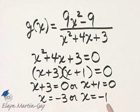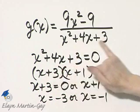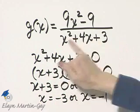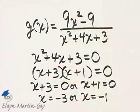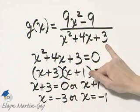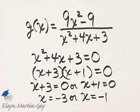So notice what we know so far. If x is negative 1, the denominator is zero and this rational expression is undefined. If x is negative 3, the denominator is zero, this rational expression is undefined.